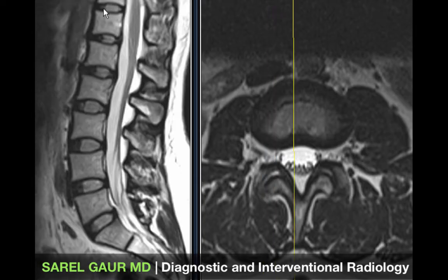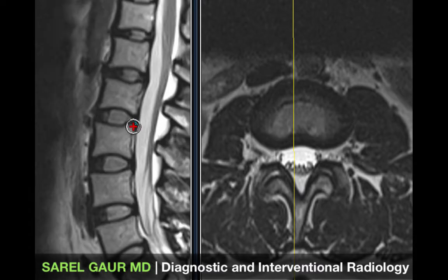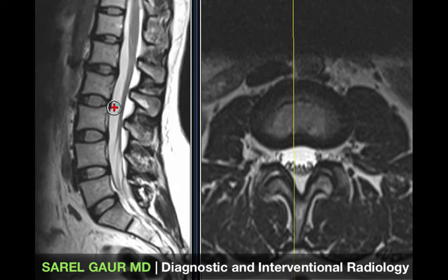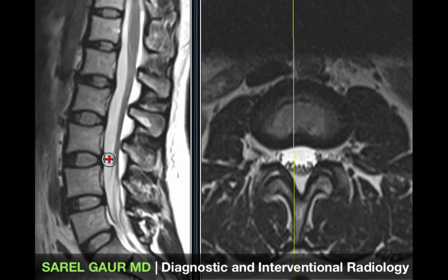Let's go back and talk about the vertebral column again. We have these vertebral bodies — there is low signal surrounding each vertebral body which is the cortex, the thick bone, and internally we have high signal due to the fat content and marrow of that vertebral body.